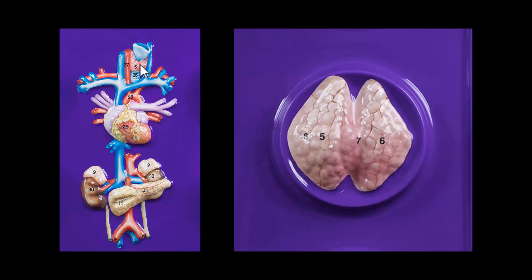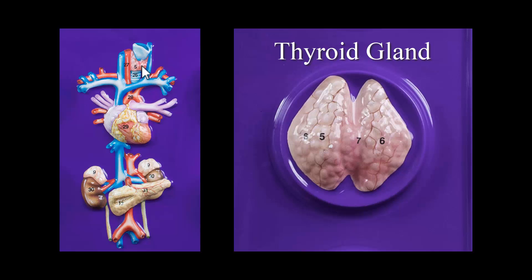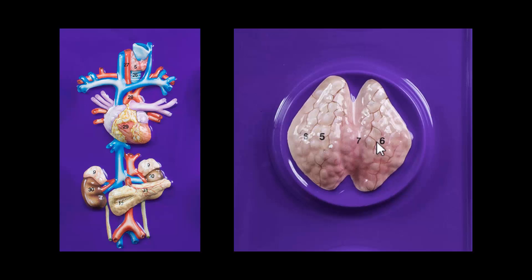Next we come down to the base of the neck where you'll find the thyroid gland. This is called the thyroid prominence — thyroid notch is another name, but it's your Adam's apple, basically. If you put your finger on your Adam's apple and slide down to the base of your neck, this is where the thyroid gland is located. As you can see, we have a right lateral lobe and a left lateral lobe, and then in the center we have tissue that connects the two together — we call that the isthmus.